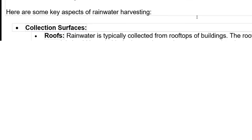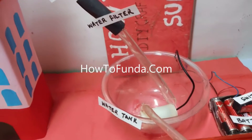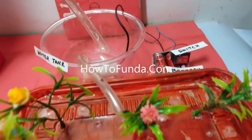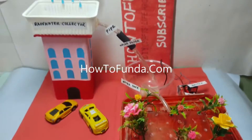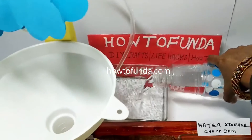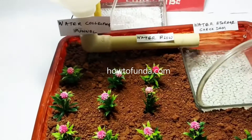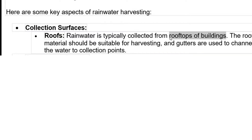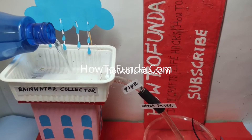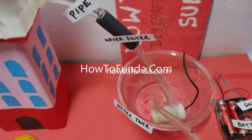Now we will see what are the key aspects involved in rainwater harvesting. If you wanted to implement it, you would look for a surface where water is going to be collected. If it is a house, we look at the rooftop of the building. If it is agricultural land, then it is the land where rainwater falls and that water needs to be collected in the field.